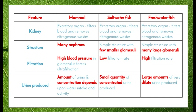Freshwater fish produce large amounts of dilute urine — lots of water is coming in, so the water needs to go.